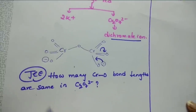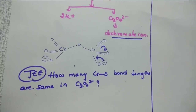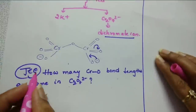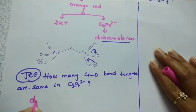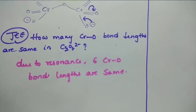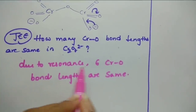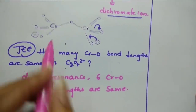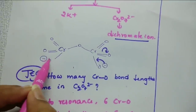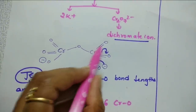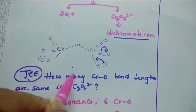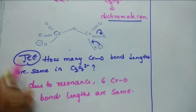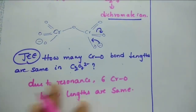What is your answer? Due to resonance, six Cr-O bond lengths are same — this bond length, this one, this one, and CrO, CrO, CrO, all are same in Cr₂O₇²⁻. This is one of the important exam questions.